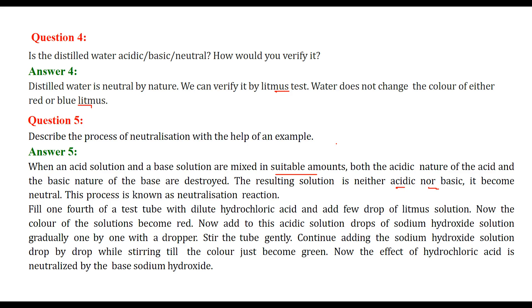To demonstrate neutralization, take a test tube and fill one-fourth of it with dilute HCl (hydrochloric acid), then add a few drops of litmus solution — the color turns red. Now add NaOH (sodium hydroxide) solution drop by drop using a dropper, stirring gently, until the color turns green. The green color indicates that the effect of HCl has been neutralized by sodium hydroxide, forming salt and water.